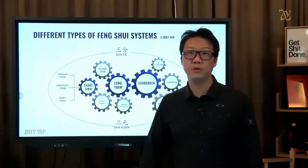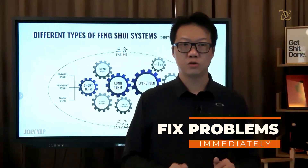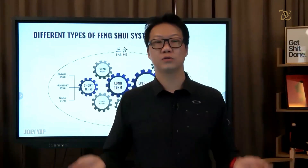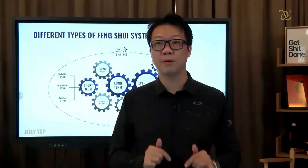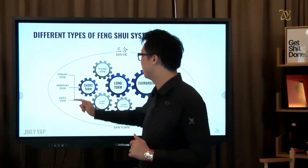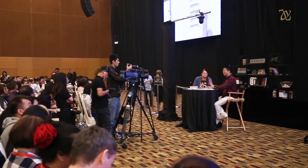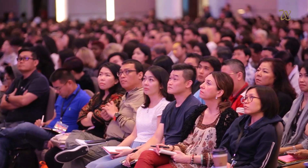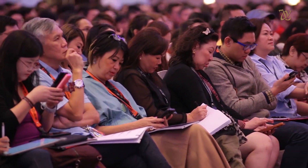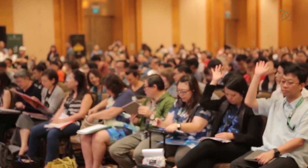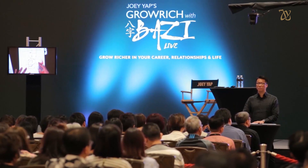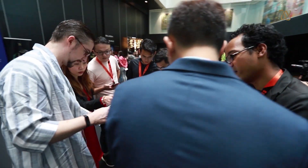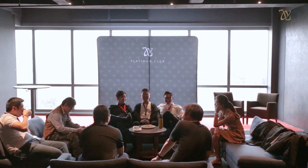Short-term is when you need to fix problems immediately. So you have a challenge right now, you want to sort this challenge out, you want to solve this problem now, you make adjustments now. So this type of feng shui is very different from long-term feng shui — there is a difference between these two things. So when we understand how to use feng shui, we will generally be able to adjust our short-term. And if you do it well, probably you might become really rich.